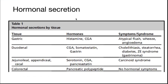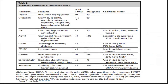Gastric neuroendocrine tumors may secrete histamine and chromogranin A. Carcinoid syndrome is associated with small bowel neuroendocrine tumors, mainly due to serotonin. Colorectal neuroendocrine tumors do not have any hormonal symptoms since they secrete only pancreatic polypeptide.